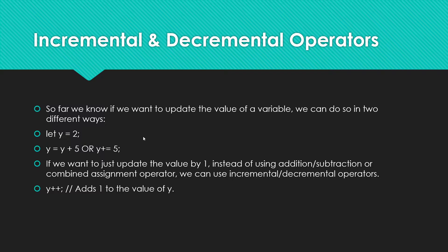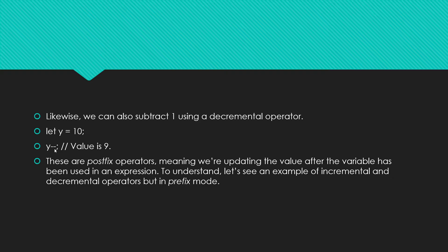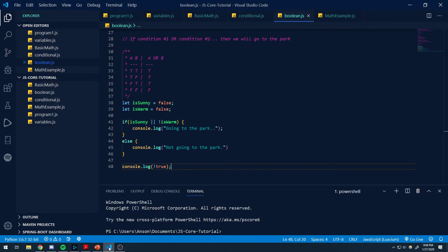Incrementing basically adds one to the operand. So if we do y plus plus, the plus plus is the incremental operator — it's going to add one to the value of y. If y was eight, y plus plus makes y nine. And likewise, decremental operators — when you use y minus minus — it subtracts one from the current value of that variable, and the value goes down by one. Let's take a look at some of these examples in code.